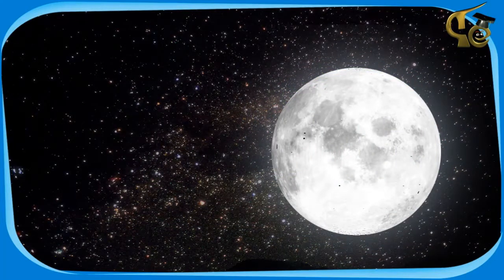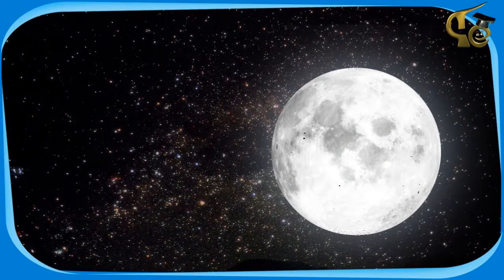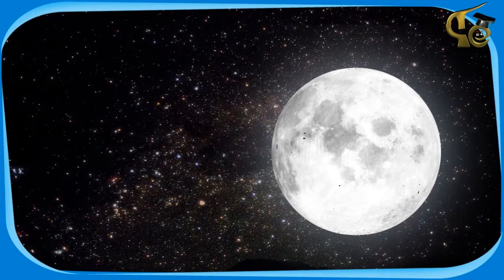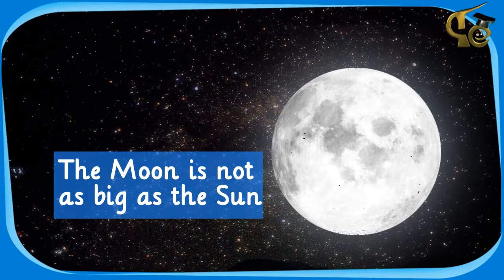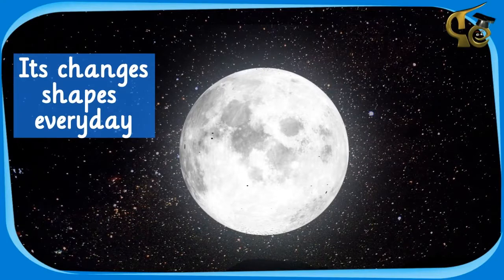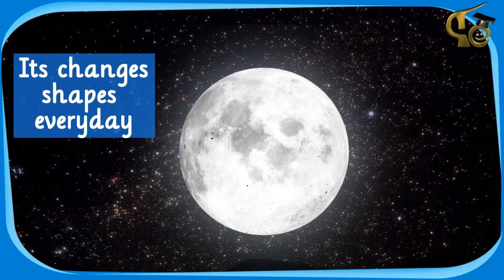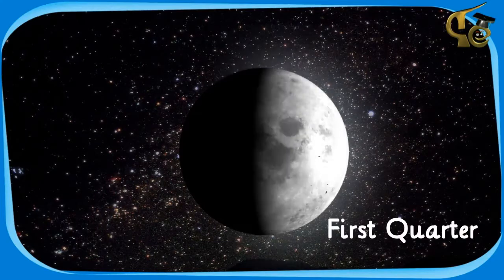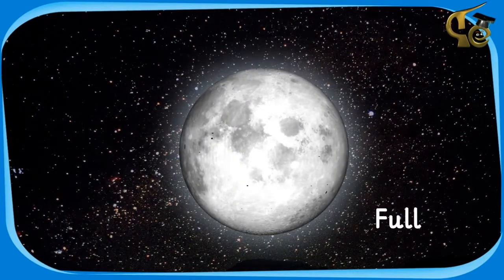Here we can see the moon and lots of twinkling stars. The moon is not as big as the sun. It changes shapes every day, going through different phases from new to first quarter, first quarter to full, full to last quarter, and so on.